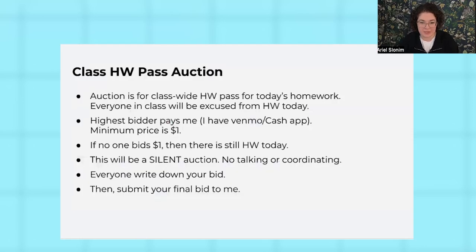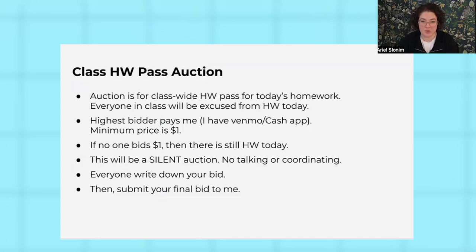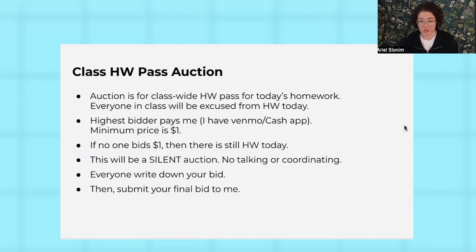We get class started with a class-wide homework pass auction. We want to auction off — make sure everybody knows this is class-wide — everyone will be excused from homework if there's a buyer in the auction. The highest bidder pays you, and they can pay cash or through an app. Minimum price is a dollar, so if no one bids a dollar, then there's still homework today. It's a silent auction.